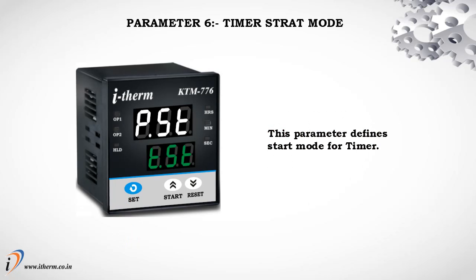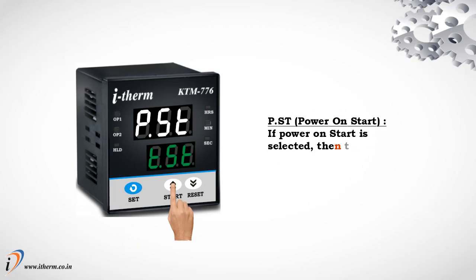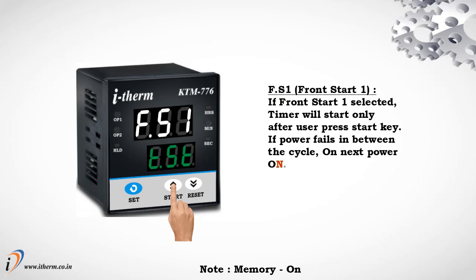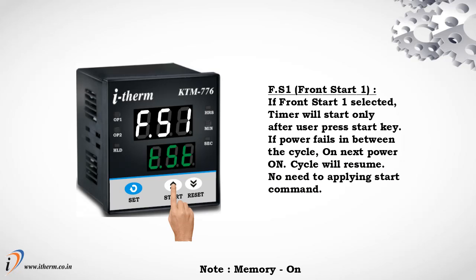Parameter 6: Timer Start Mode. This parameter defines the start mode for the timer. Power On Start: if selected, the timer will count from power on. Front Start 1: if selected, the timer will start only after the user presses the Start key. If power fails during the cycle, on next power on no need to apply the start command again.